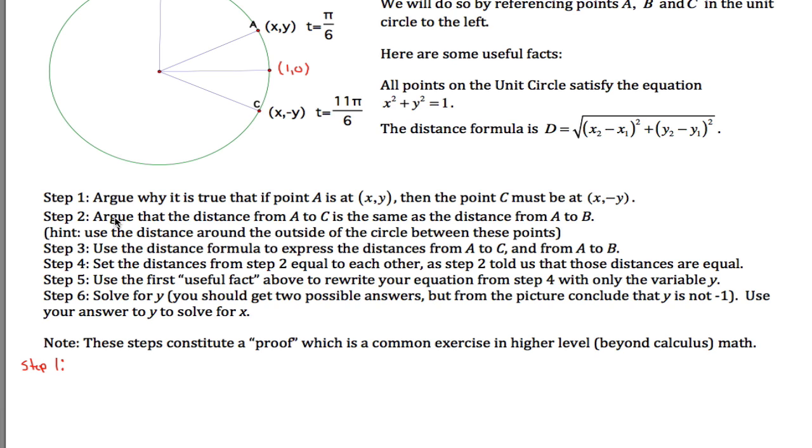Step 1. So step 1 wants me to argue why it's true that if this point is (x,y), this point has got to be (x, negative y). And I guess what I would say is, notice that point C is pi over 6 clockwise from (1,0). Usually we think about this point as 11 pi over 6 counterclockwise because we always travel counterclockwise. But you could also say it's pi over 6 clockwise because all the way around is 2 pi. So C is pi over 6 clockwise from (1,0) while A is pi over 6 counterclockwise from (1,0).